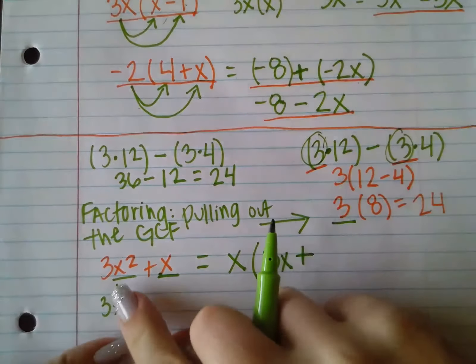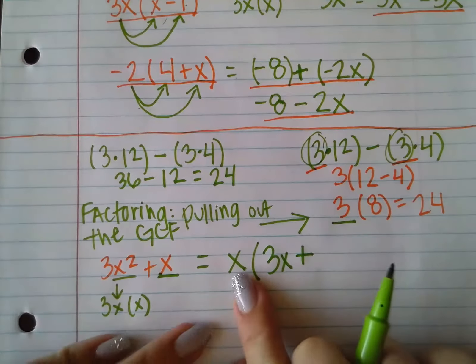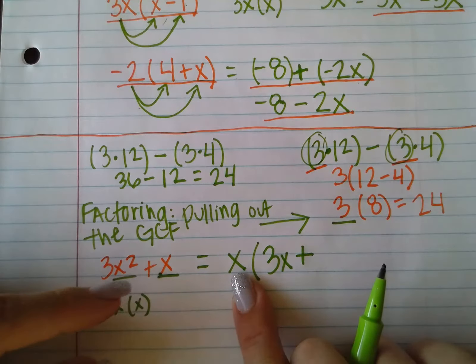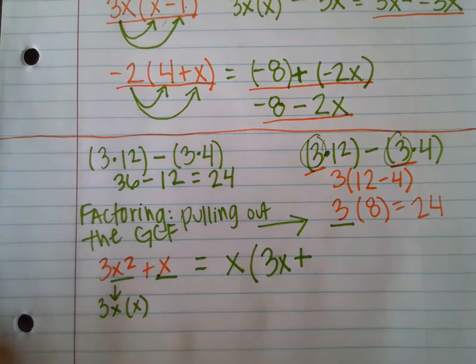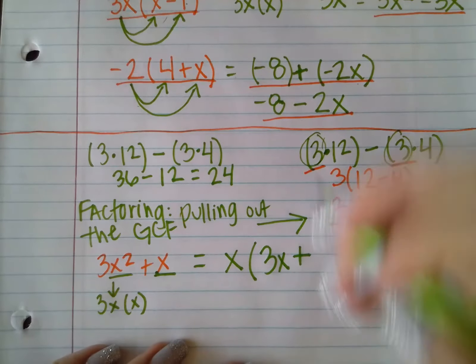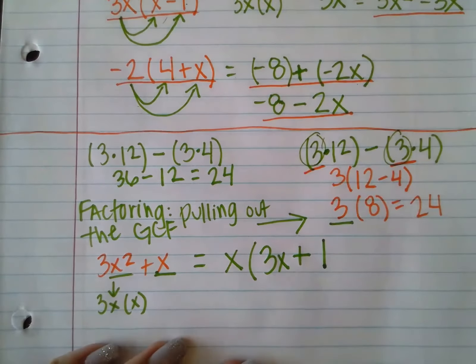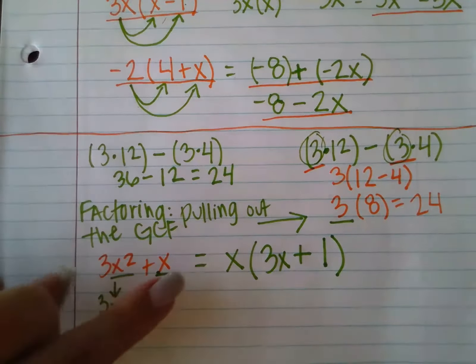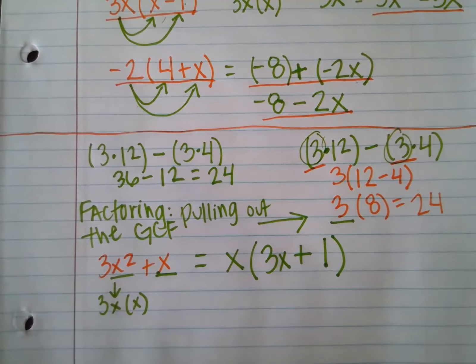And I'm going to keep the addition sign from the original expression. And if I factor out an x from x, I'm not really left with nothing. This wouldn't be a 0, because if I went back and distributed, x times 0 is going to be 0. So what's going to be left is a 1. So this is 3x squared plus x in its factored expression.